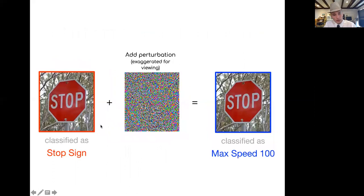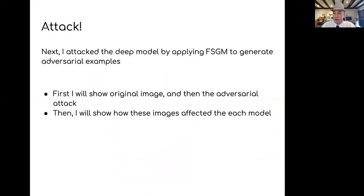Here's another example. This is, of course, a stop sign. We can tell. But then you add this point looking pattern right here and you get a maximum speed 100, which if you're a Tesla, that'd be very bad.